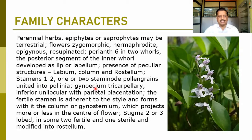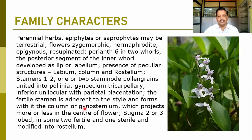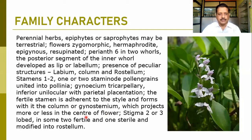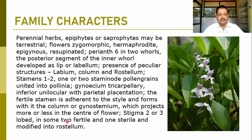The gynoecium is tricarpellary with an inferior ovary. It is mostly unilocular with parietal placentation, observed when we take the transverse section of the ovary. The fertile stamen is adherent to the style and forms the column, also known as the gynostamium. The stigma may be two- or three-lobed; two fertile and one sterile, the sterile one being modified into a rostellum.